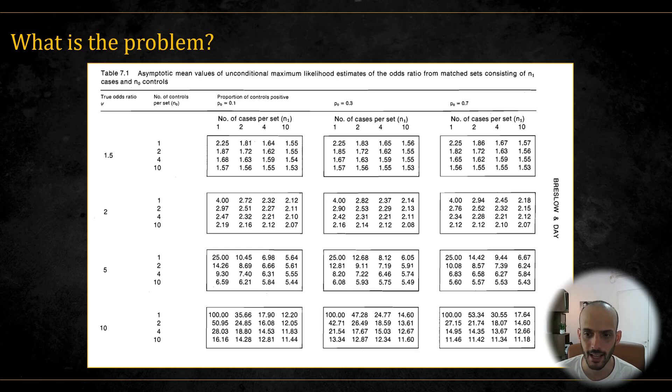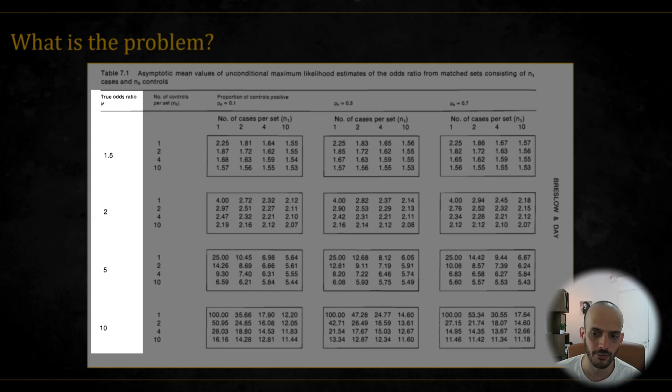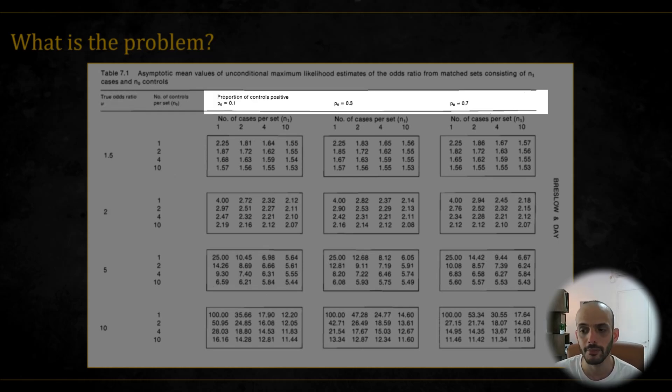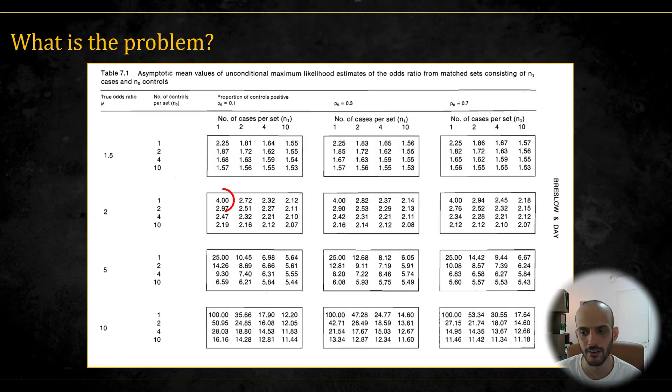Here is a table from Breslow and Day's book, Statistical Methods in Cancer Research, Volume 1. You can see that for any true odds ratio given on the left and any probabilities shown on top, the one-to-one matching effectively squares the odds ratio, meaning that the estimated beta coefficients are doubled. Note that these are asymptotic results, the actual values can differ substantially.